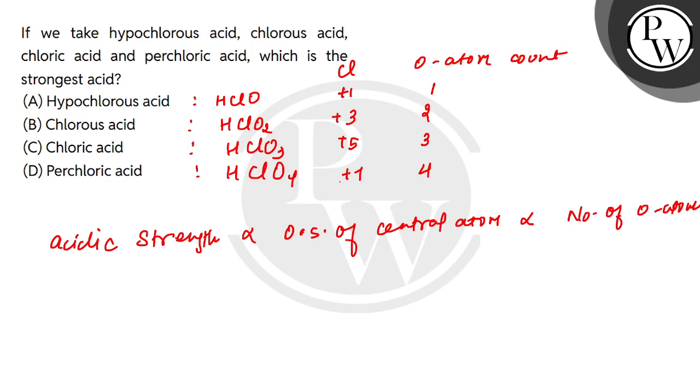So, you can see that HClO4 has the maximum oxidation state of chlorine and the maximum number of oxygen atoms. That means, the acidic strength of perchloric acid is the highest. So, option D will be correct, rest are incorrect.